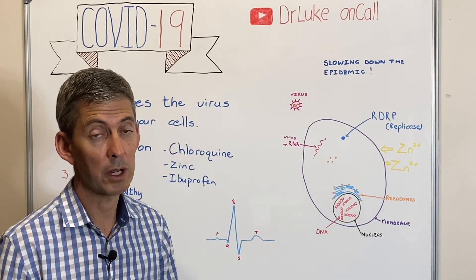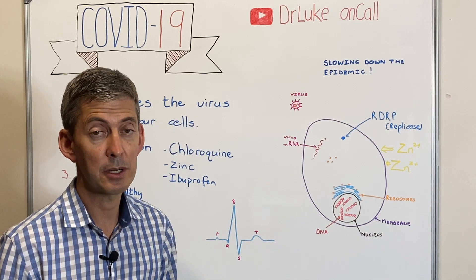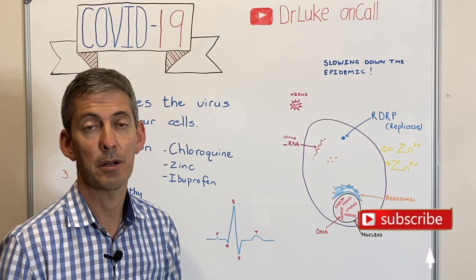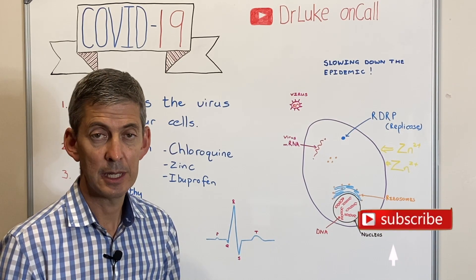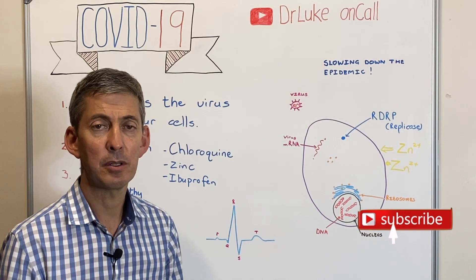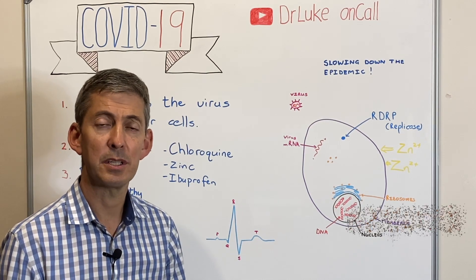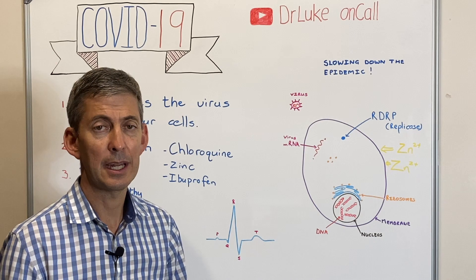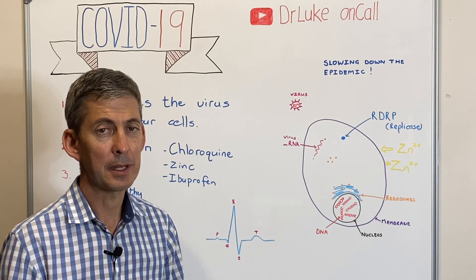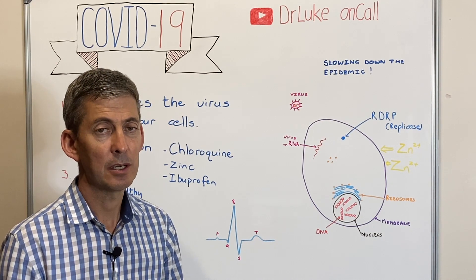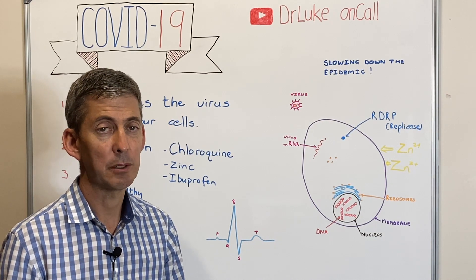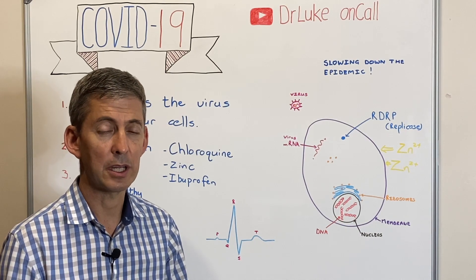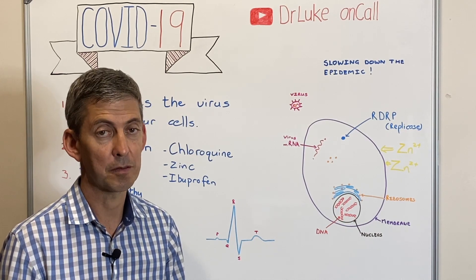Chloroquine has been around for quite a while — it's an old malaria drug. We don't really use it for malaria anymore because there's a lot of resistance. So we actually know how the drug behaves, what the side effects are, what the contraindications are, and it's easier to understand what it does and does not do, and what dosages you can give and should be careful of.